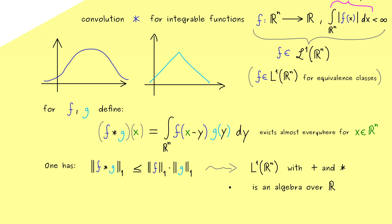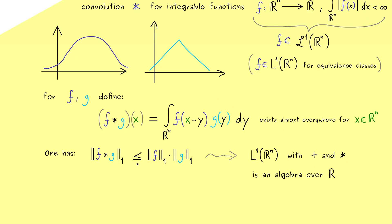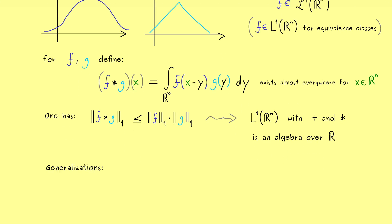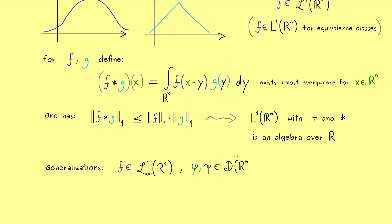The question is how we can extend this definition to distributions. As always, we first look at a locally integrable function — in other words, we first give a useful definition for a regular distribution. Let's fix f as a locally integrable function, written as L1 with loc in the index. In addition, we take two test functions phi and psi, which are also integrable, so we don't have any problems with the convolution there.